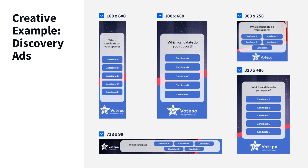The last creative example we'd like to share is our discovery unit. These are especially powerful for political advertising. The great thing is they are fully customizable — we can change the colors, logos, branding, and question to align with your advertiser. Beyond that, we're able to collect users' responses. For example, if you ask the question 'which candidate do you support,' we can pull those audiences and retarget users who said Candidate A, Candidate B, and so on with specific messaging — or suppress them if they're interested in a candidate you wouldn't like to be associated with.